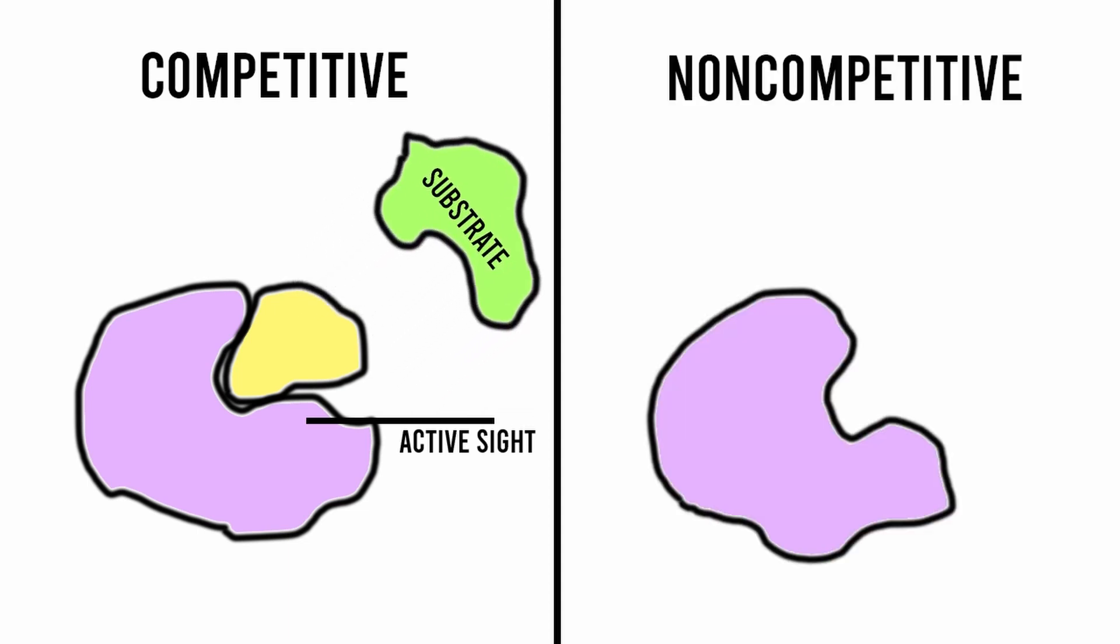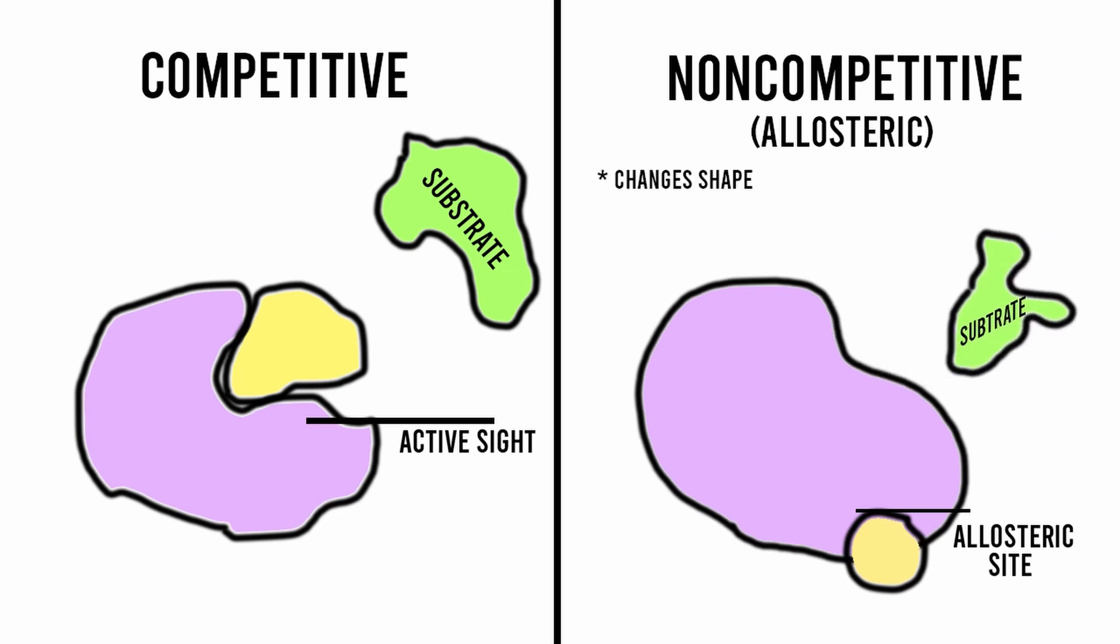And non-competitive or allosteric inhibitors, which bind to another part of the enzyme known as the allosteric site, causing the enzyme to change shape, thus making the active site less effective.